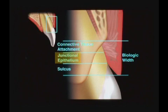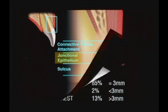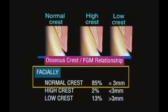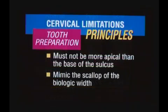The term epithelial attachment has been changed and is now called the junctional epithelium. The normal crest, which is a 3 millimeter measurement from the crest of the bone to the free gingival margin — there are certain parameters that are absolutely critical as we begin to try to understand the cervical limitations of tooth preparation.